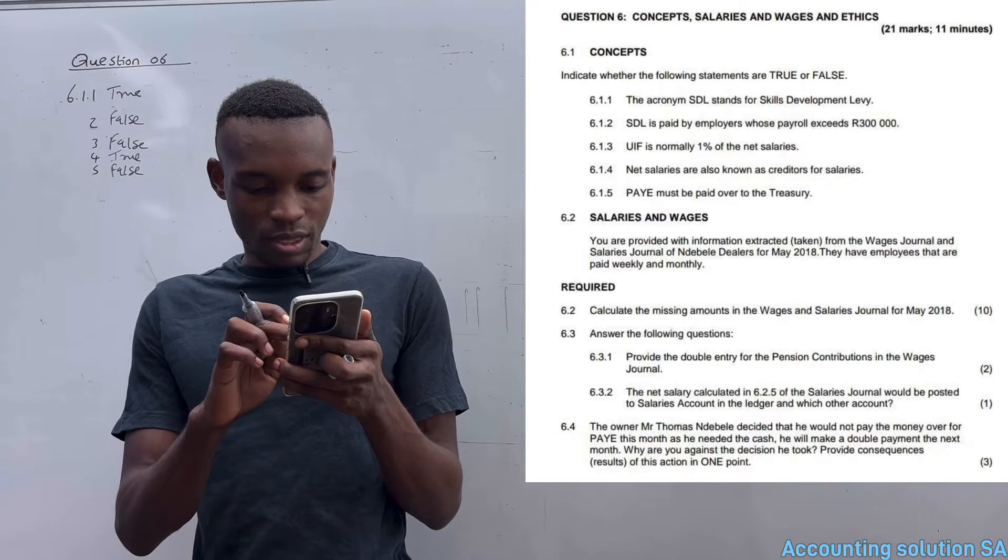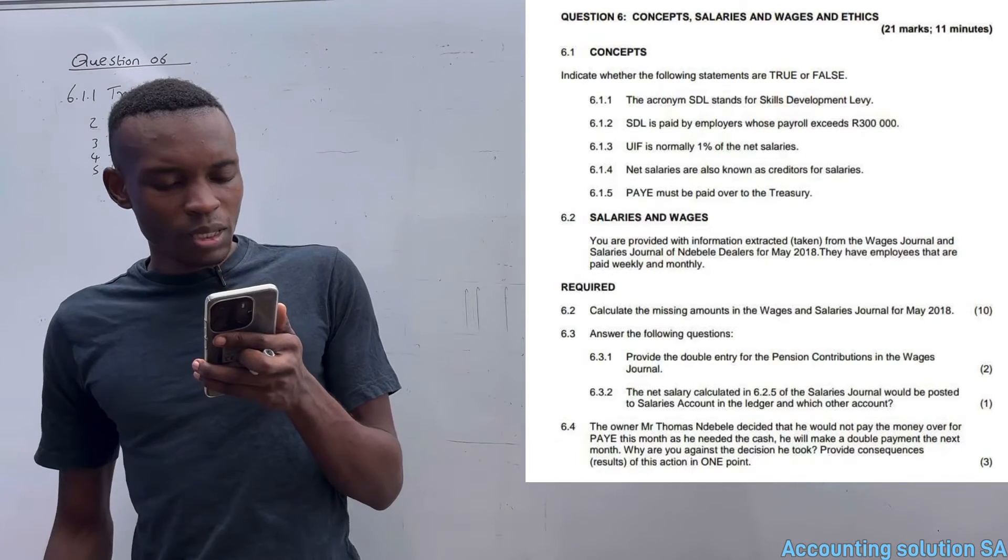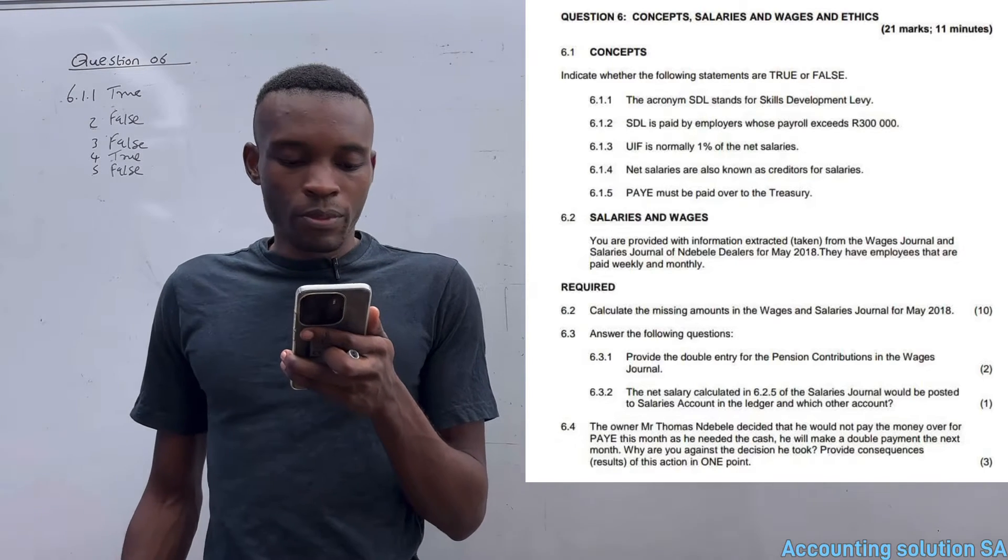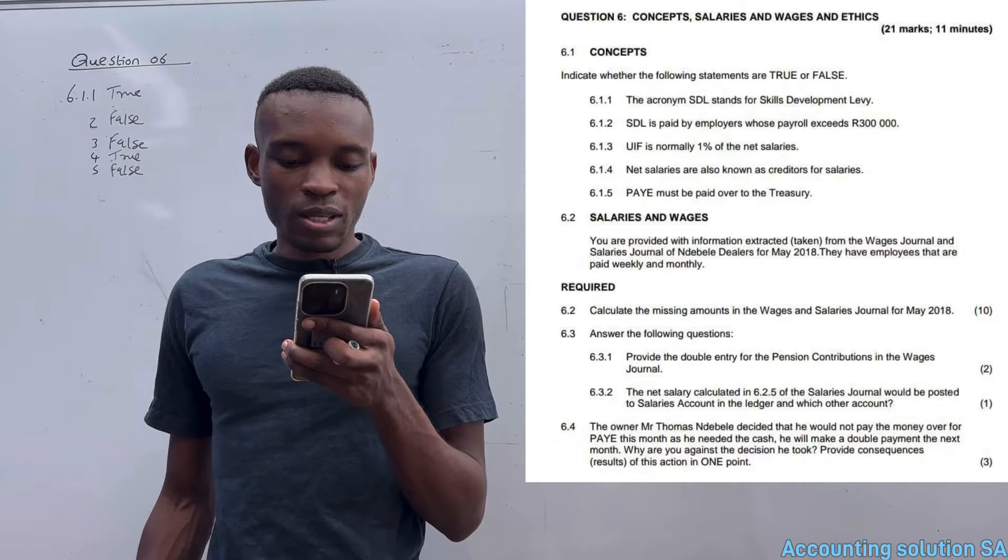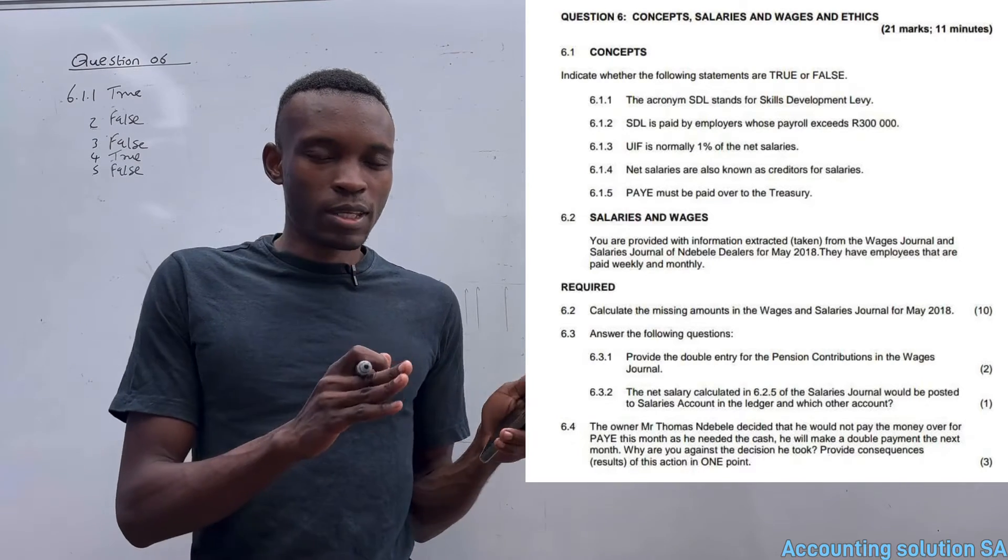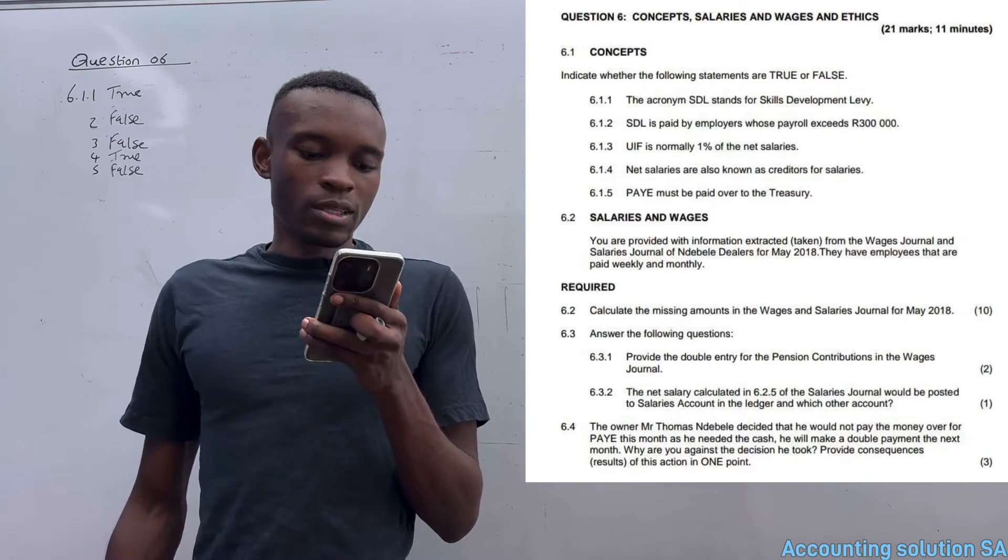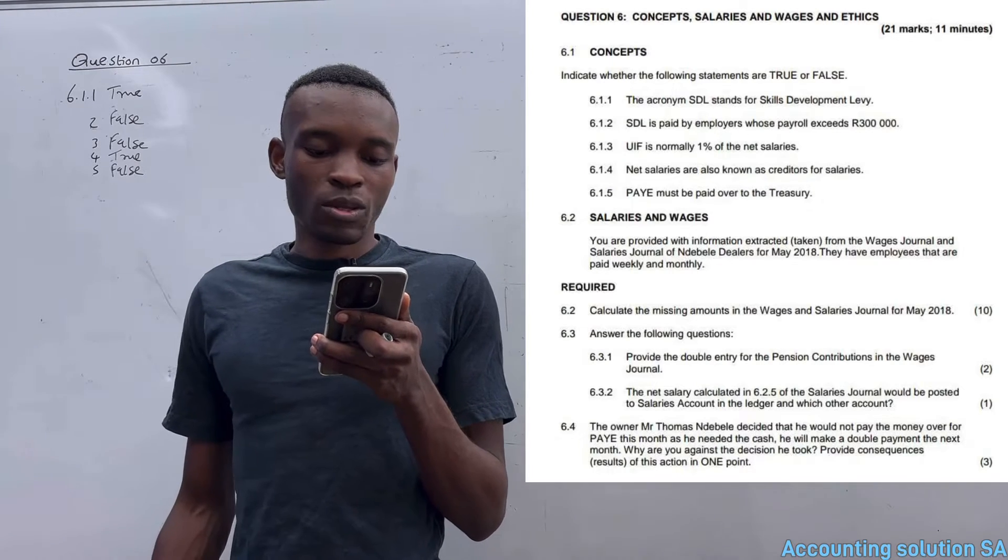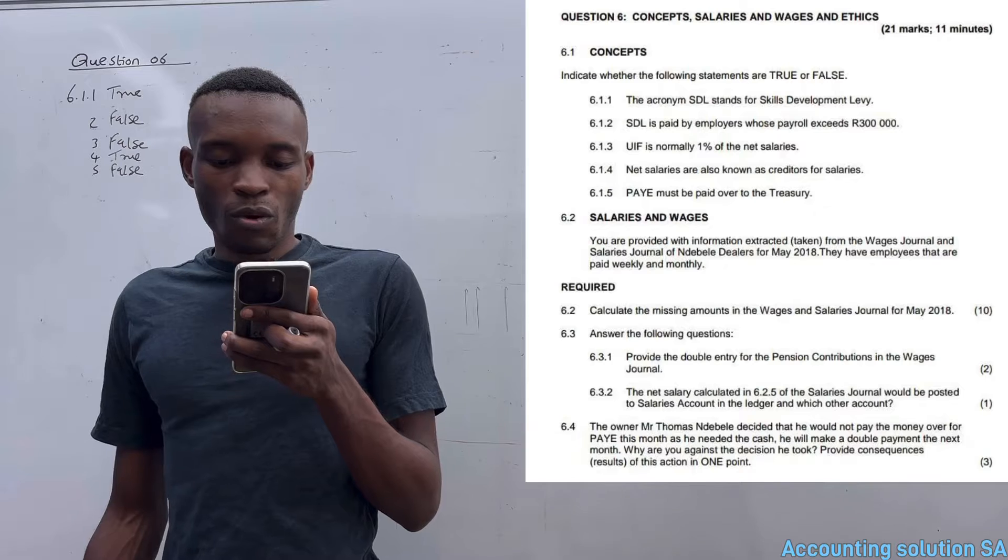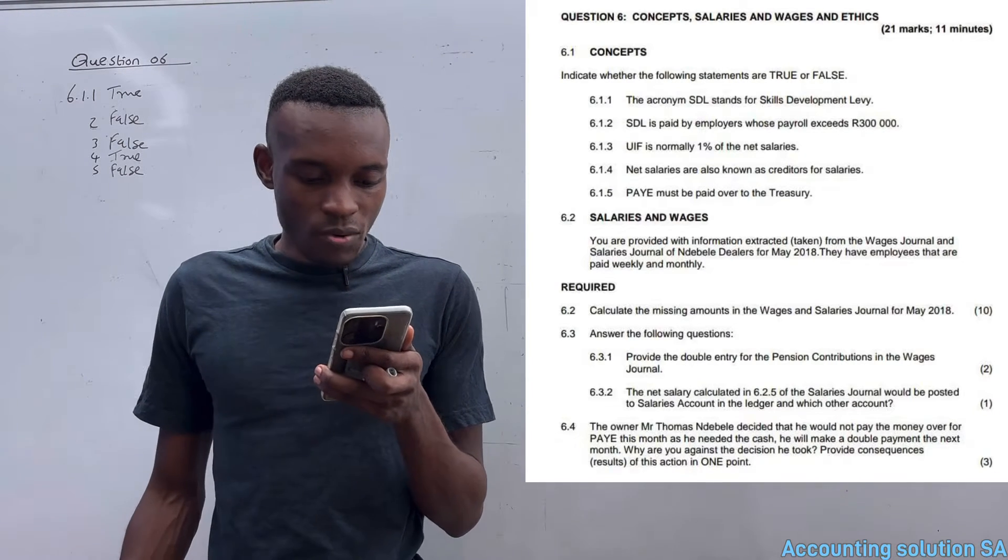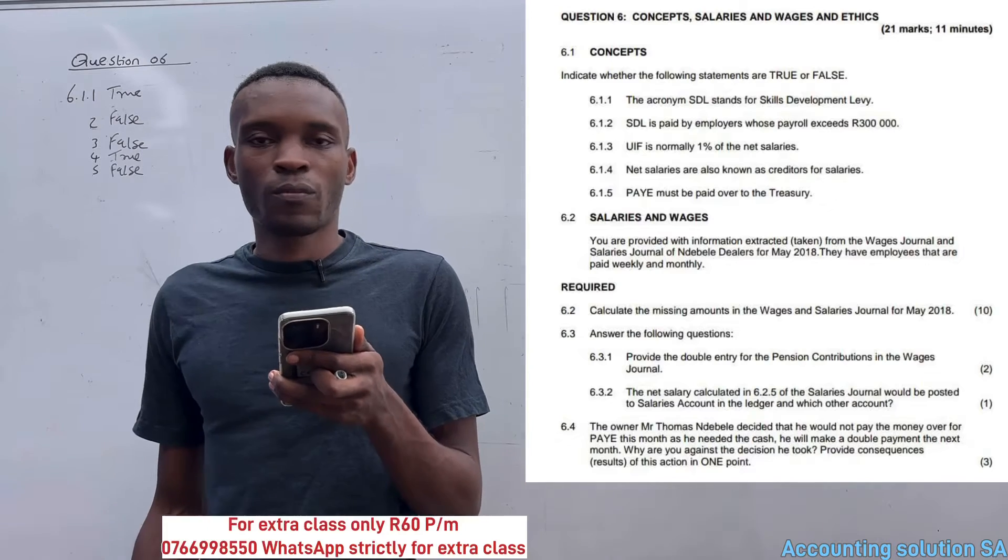They also said answer the following questions: 6.3.1 - Provide double entry for pension contribution, indicating debit side and credit side. And 6.3.2 - The net salary calculated under 6.2.5 of the salary journal will be posted to salary account in the general ledger and which other account?